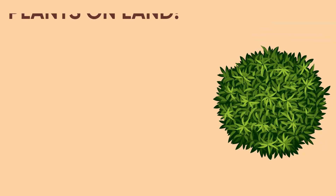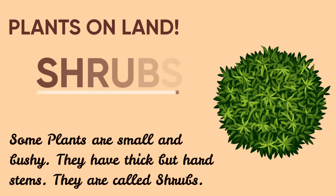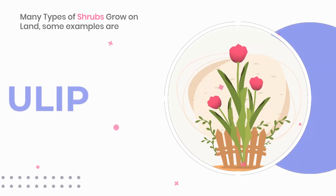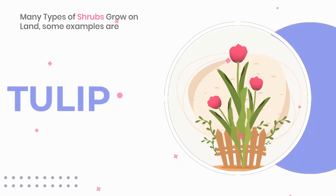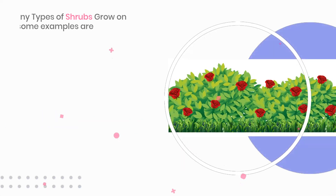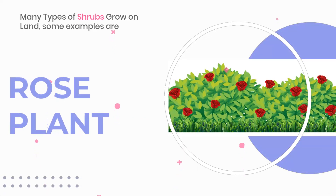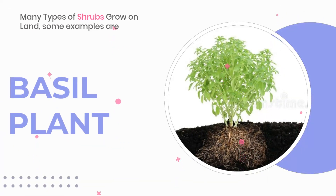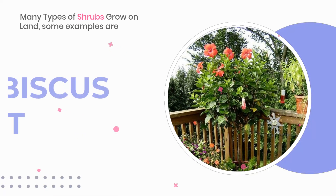Some plants that grow on land are small and bushy. They have thick but hard stems. They are called shrubs. Some examples are tulip, rose plant, basil plant, hibiscus plant.